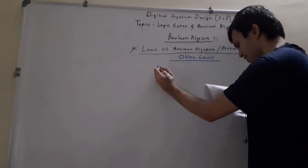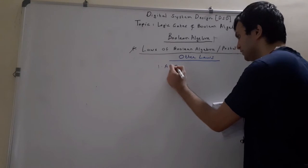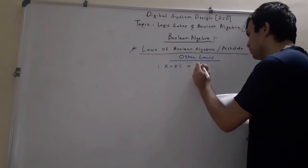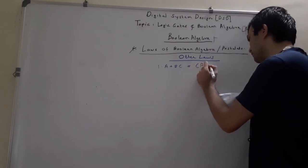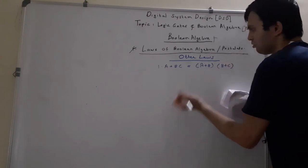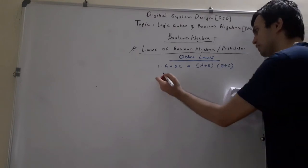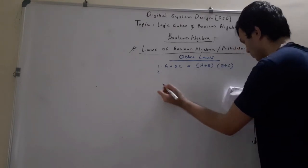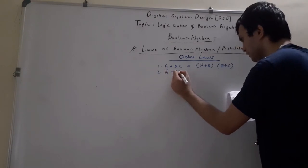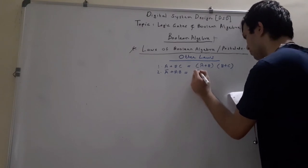The first of these five unnamed laws states that when you have A plus BC, you can write it as (A plus B) dot (A plus C). You should remember all these laws by heart for simplification of Boolean expressions. Then when you have Ā plus AB, you can write it as Ā plus B.